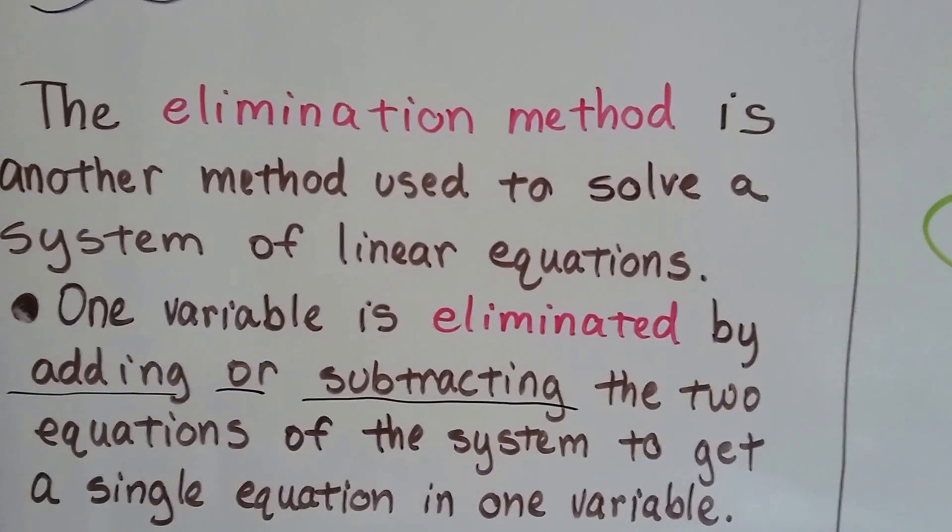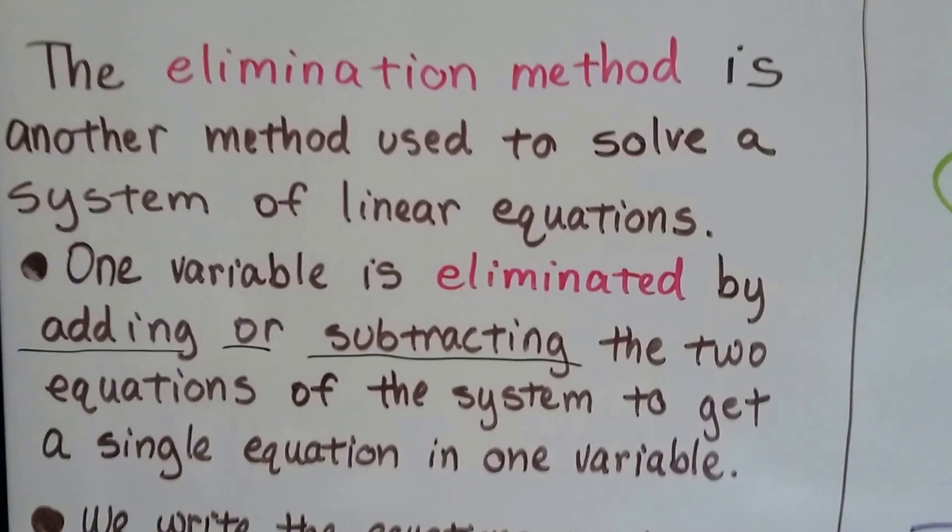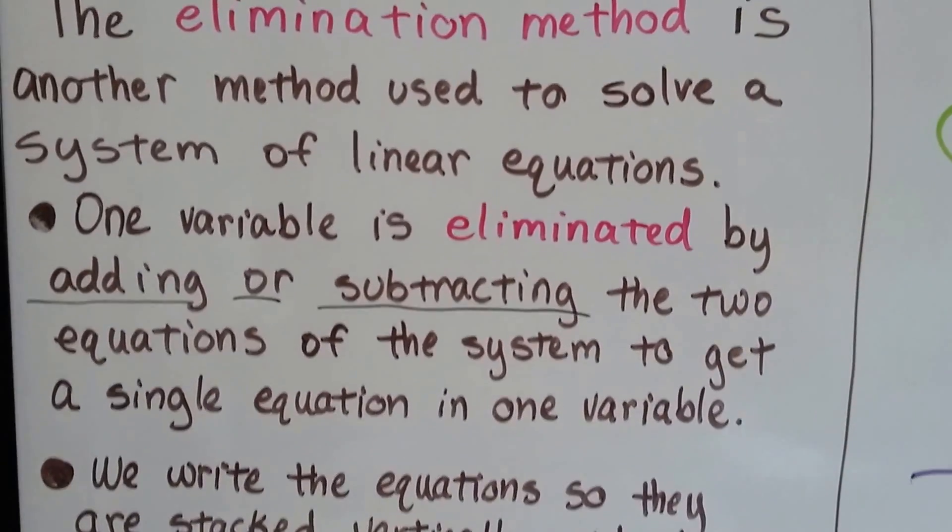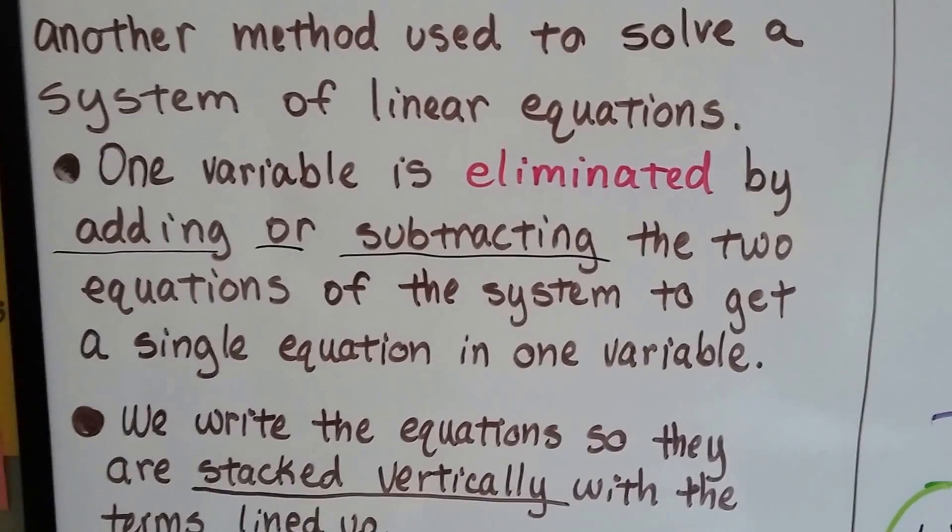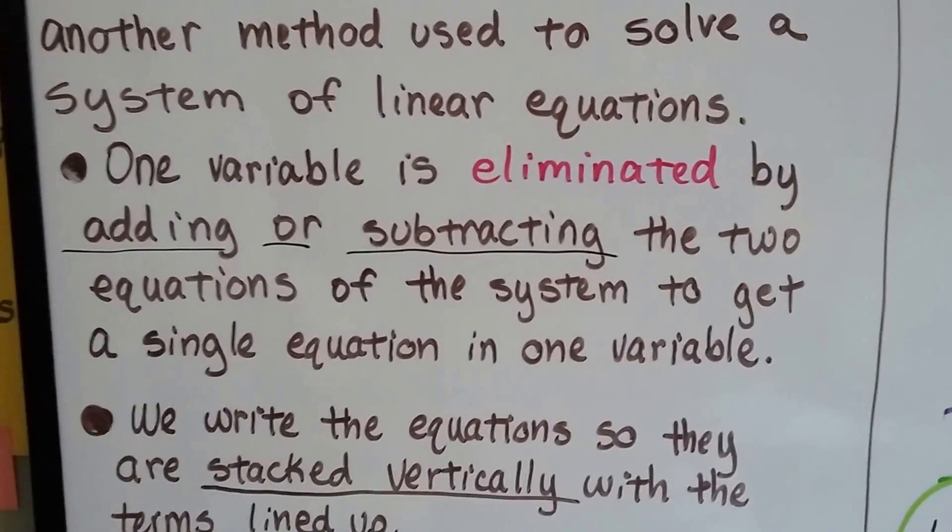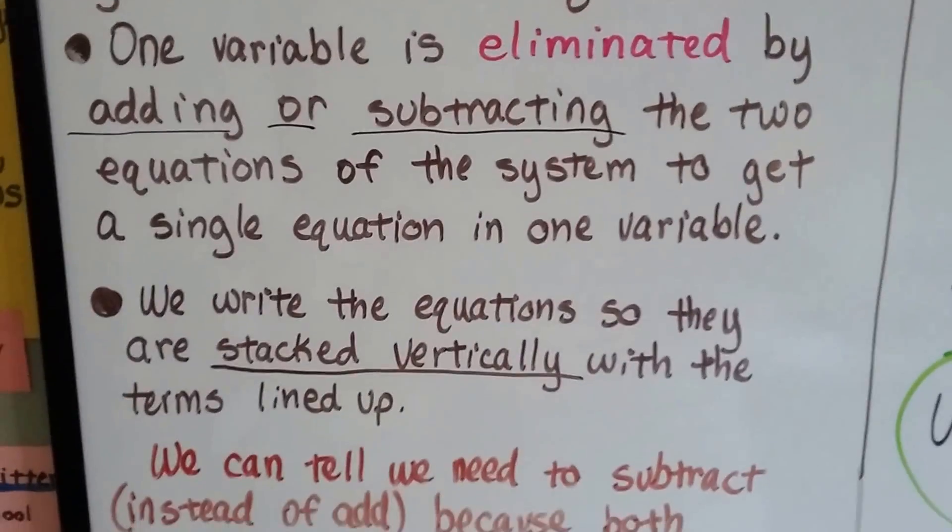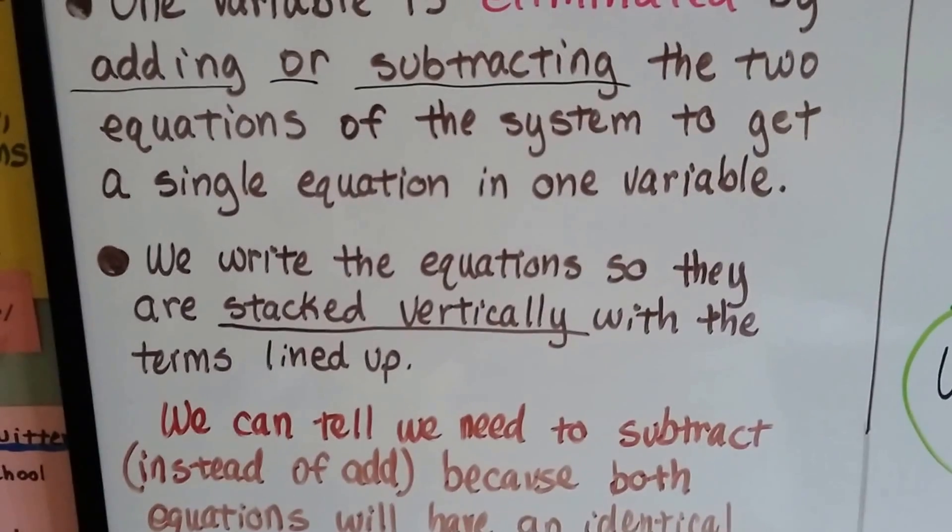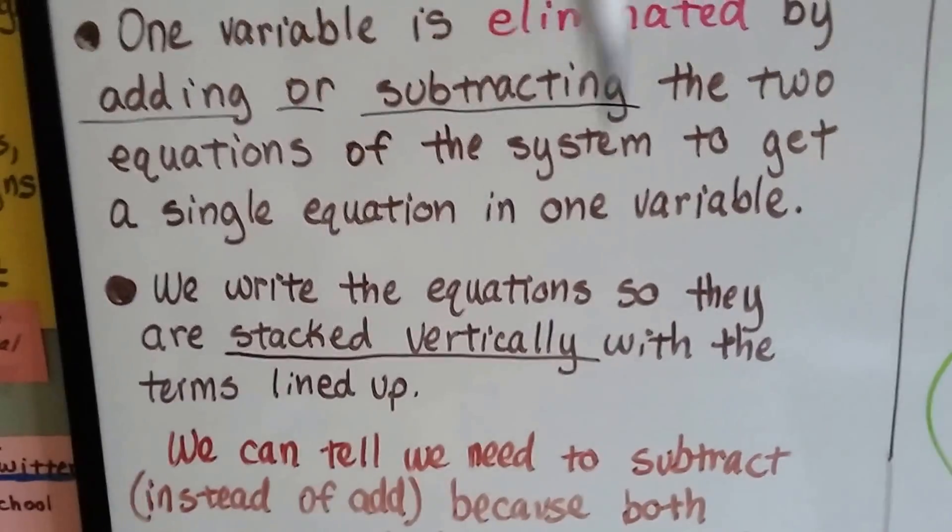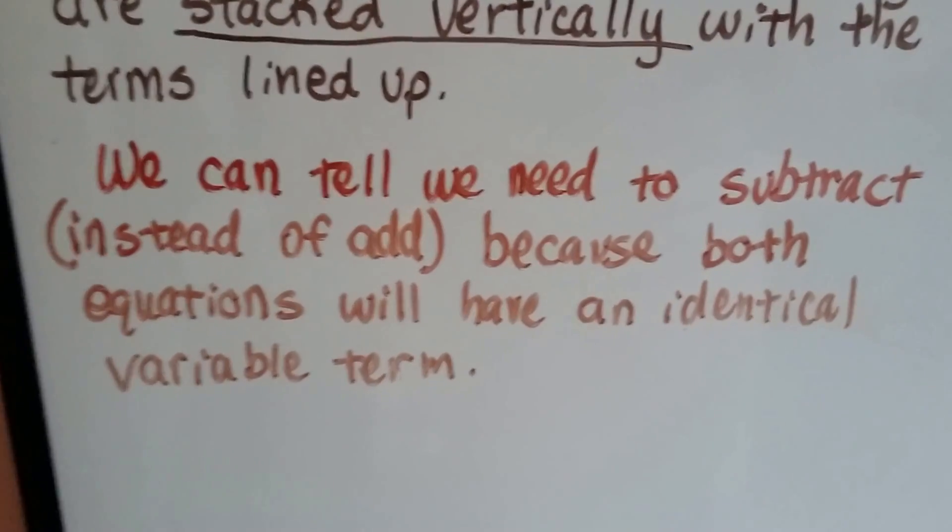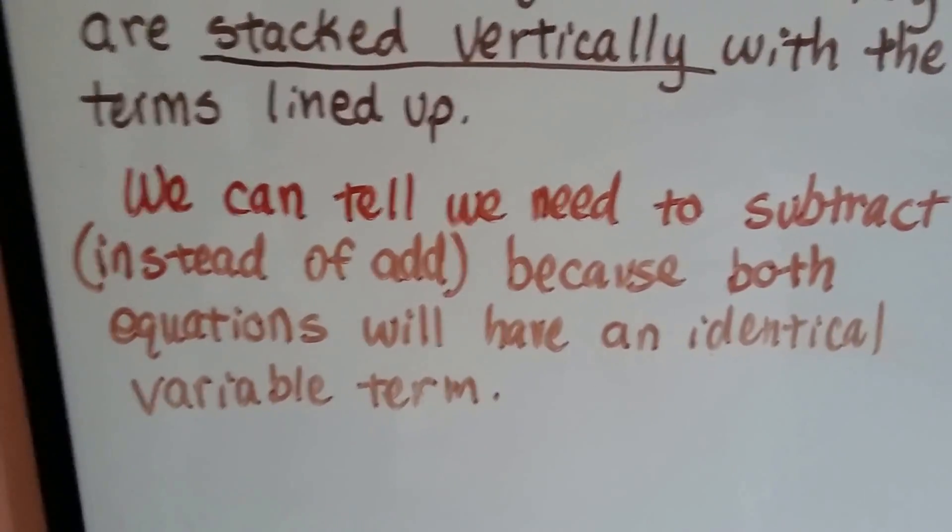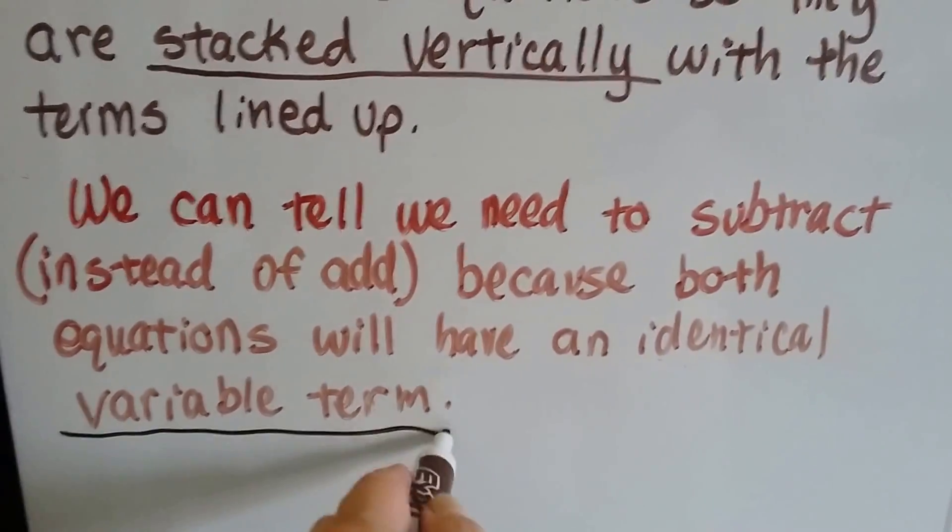The elimination method is another method used to solve a system of linear equations. One variable is eliminated by adding or subtracting the two equations of the system to get a single equation in one variable. We write the equations so they're stacked vertically with the terms lined up. We can tell we need to subtract instead of add because both equations will have an identical variable term.